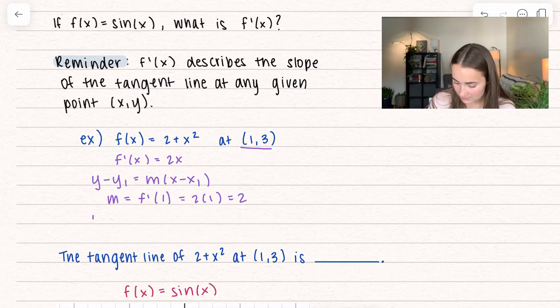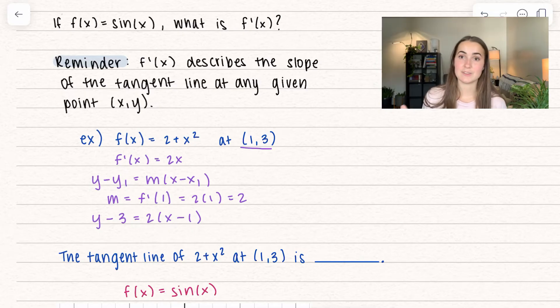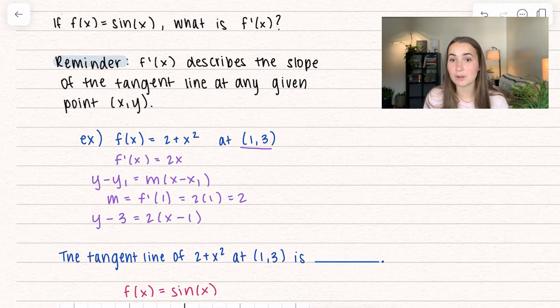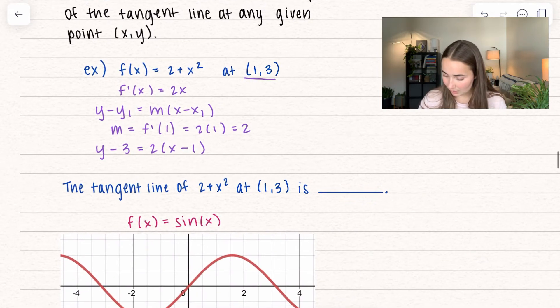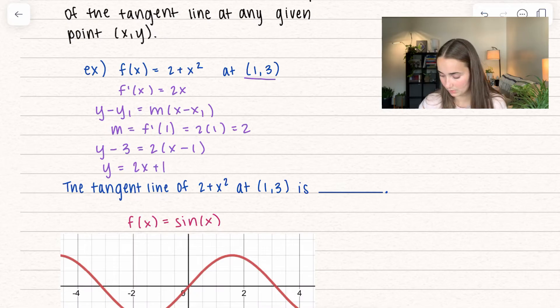So when I plug all of this in, I get y minus 3 equals 2 times x minus 1. That's what I mean by the derivative helps us find the slope of the tangent line at any given point. I could plug in any point and boom, I already got the slope. The tangent line of 2x plus x squared at (1, 3) is 2x plus 1.